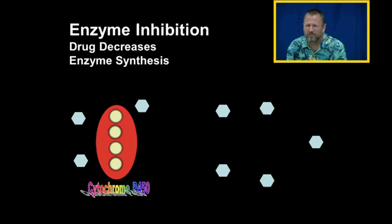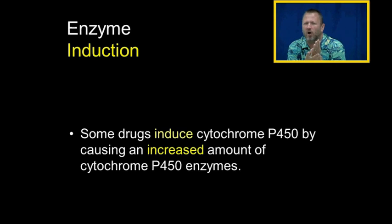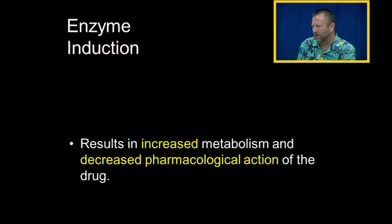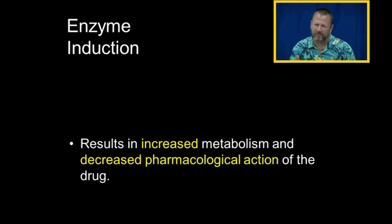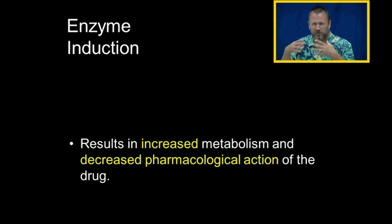Drugs that are enzyme inhibitors will have increased action over time because we're blocking the thing that's breaking them down. Some drugs are inducers of the cytochrome P450 system, meaning they increase the amount of cytochrome P450 enzymes — they cause the garbage disposal to work more. When somebody takes an enzyme inducer, they increase the metabolism of the drug, creating more disposal sites, so the drug works less over time and there's less drug available even at the same dose.